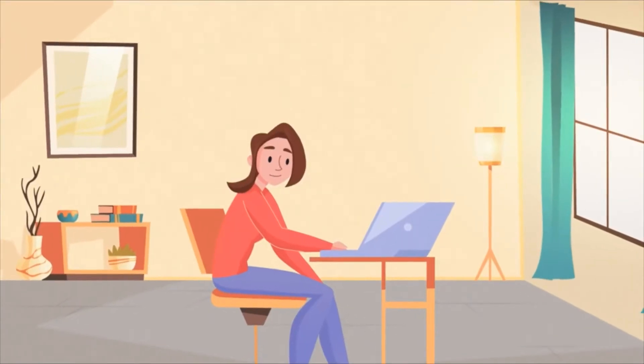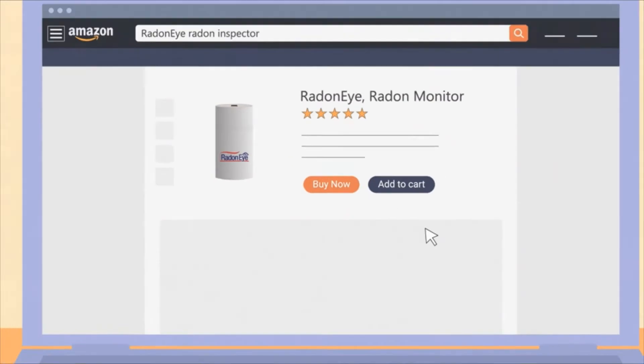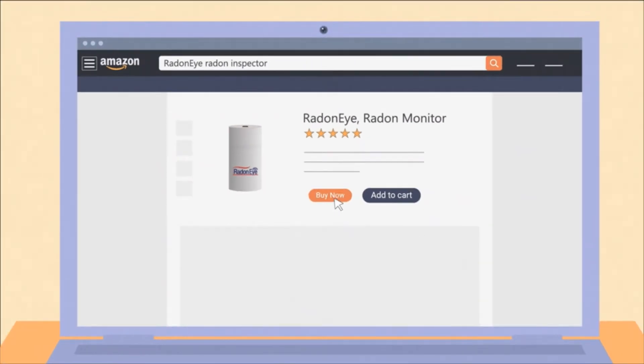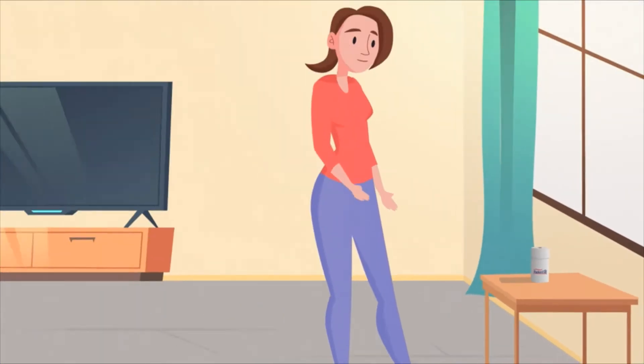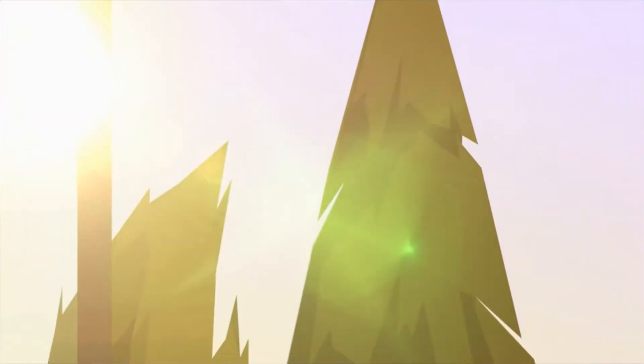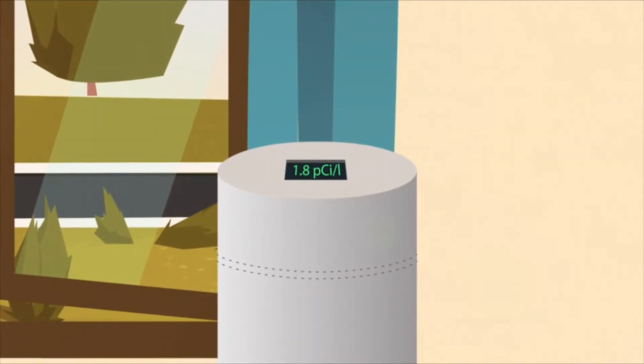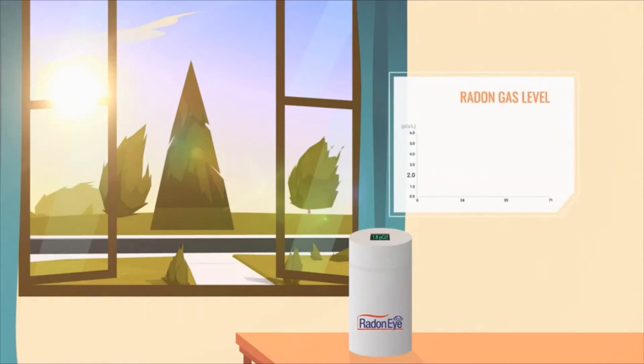Julia had never heard of radon gas until then. Alarmed by Tammy's experience, she purchased and installed an EcoSense Radon Eye monitor in her home. 10 minutes after plug and play setup, Julia had her first radon gas reading of 1.8 picocuries per liter. Throughout the summer, Julia's home radon levels remained between 2 and 3.5 picocuries per liter.